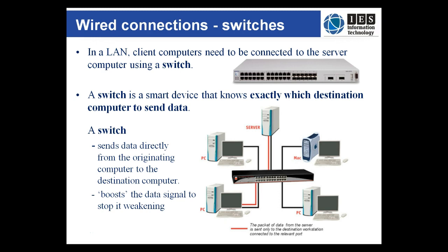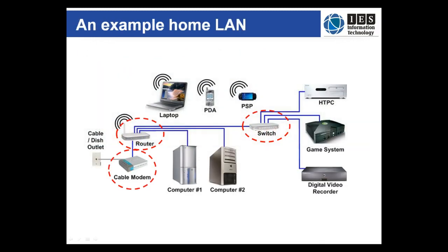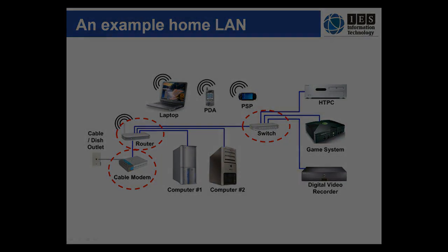A switch also boosts the data signal to stop it weakening. In a home network, a modem router can act as a switch, as well as connecting to the internet and running as a wireless AP. This is possible because most home networks are small, and it's more cost-effective and simpler to buy a single device rather than three separate devices.